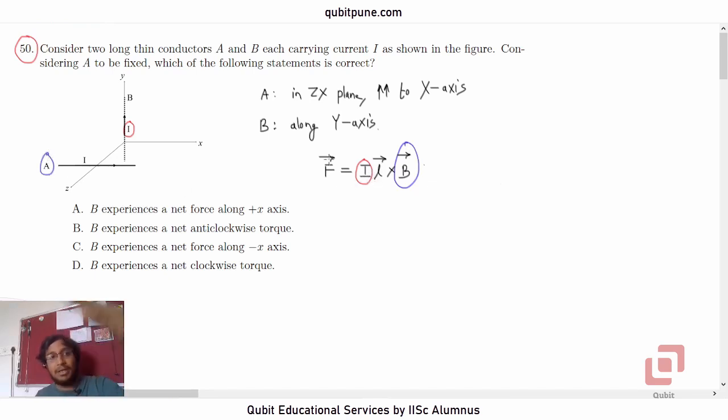So I and L bar are related to conductor B. The magnetic field B bar itself is related to conductor A. So I hope that is clear.